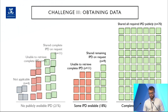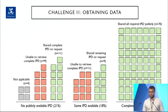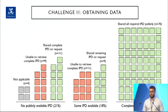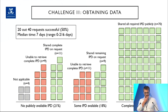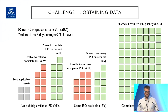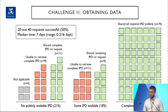The remaining 24, or 21%, didn't share any data publicly; 11 of those shared with us when we asked. Four were not applicable, three stated upfront they couldn't share, and one we couldn't source contact details for. Overall, of the 40 requests we made, 20 were successful. When we asked for data, the median time to receive it was seven days, however it ranged up to almost two-thirds of a year, which was not ideal.